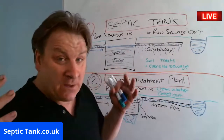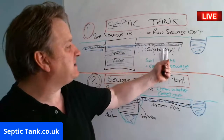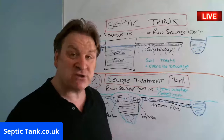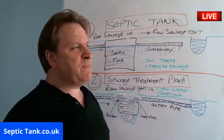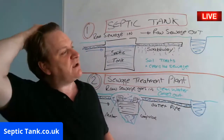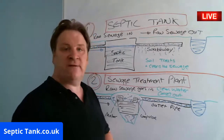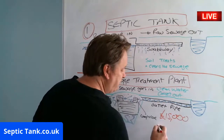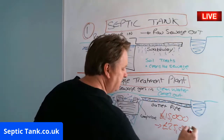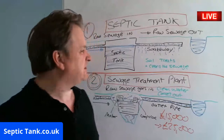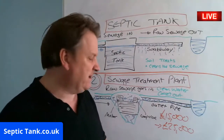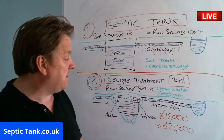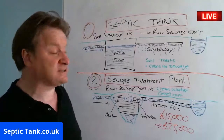Many people are being quoted £15,000 to £30,000 to replace their septic tank and soakaway with a sewage treatment plant. These sewage treatment plants can be quite expensive — for a three to four bedroom house with five to nine people, some of these biodigesters can cost £15,000 to £25,000. By contrast, I sell septic tank and soakaway kits on my site for £1,499 — that's £13,000 to £23,000 cheaper.